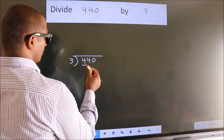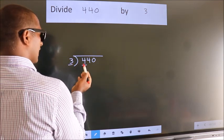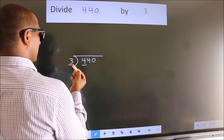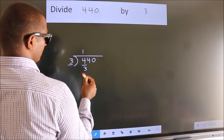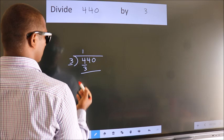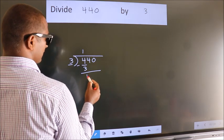Here we have 4, here 3. A number close to 4 in 3 table is 3 1s 3. Now we should subtract. We get 1.